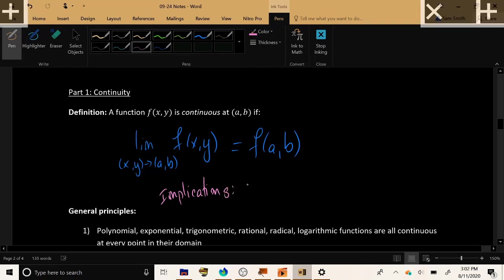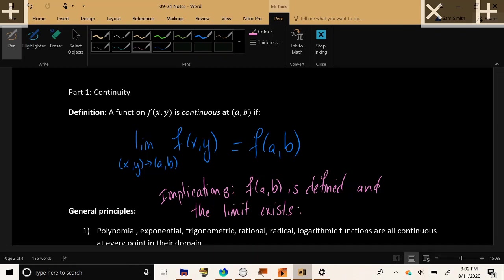they both have to actually exist. So f of ab is defined and the limit exists. Now not only that, but in addition to the function being defined at the point and the limit actually existing, those two quantities have to be exactly the same. Now in practice, this amounts to saying that the graph of f of xy doesn't have any rifts, tears, holes in the graph at the point xy. It's just a nice, smooth, uninterrupted, unbroken behavior in the graph.